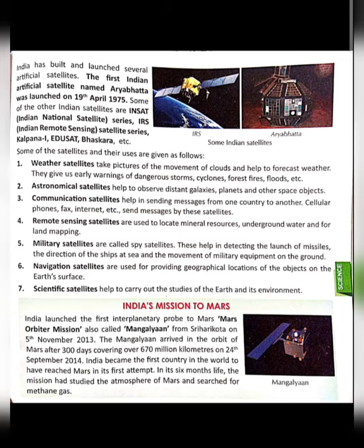Navigation satellites are used for providing geographical locations of objects on the earth's surface. For example, the GPS system in your phone helps when you are traveling in metro cities and need to find routes or avoid traffic. Ola and Uber cabs also use the GPS system. This works due to navigation satellites, which help find routes with less traffic. Scientific satellites help carry out studies of the earth and its movement. This was all about artificial satellites.